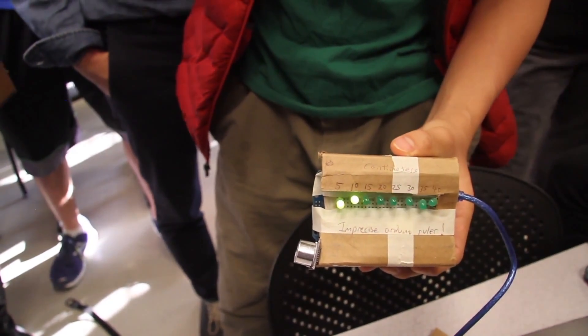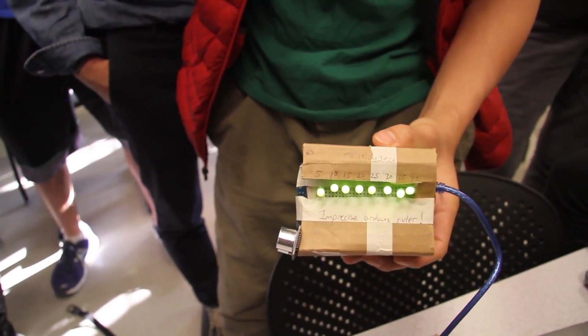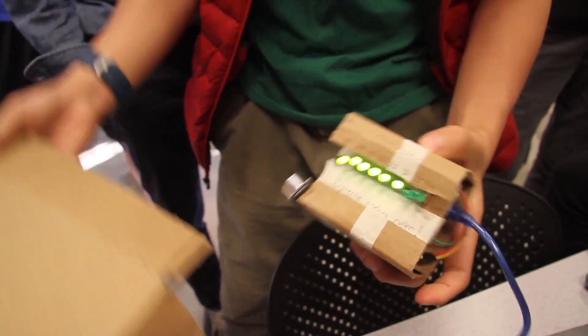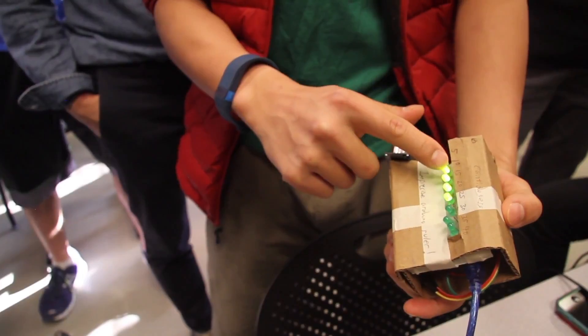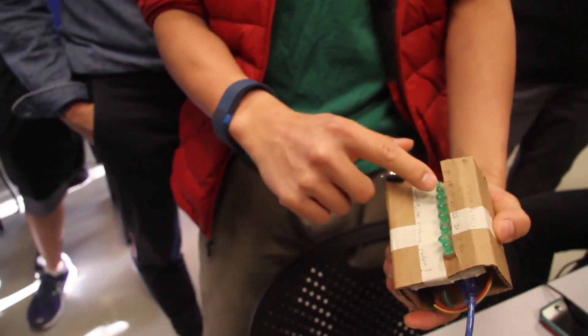So it lights up. Whoa. What's the light? Press your hand on it. It's very imprecise. This lights up from distance from five to ten centimeters. This goes from ten to fifteen. This is fifteen to twenty, and so on.